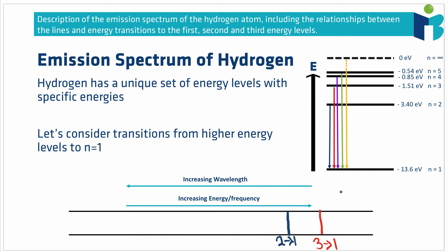For the 4 to 1 transition shown in purple, the photon energy is higher still, but the difference in energy between the 3 to 1 and 4 to 1 transitions is smaller than the difference between the 2 to 1 and 3 to 1, because the gap between n equals 3 and n equals 4 is smaller than between n equals 2 and n equals 3. So the 4 to 1 line is higher energy than 3 to 1, but not by as much. The same logic applies to the 5 to 1 transition in green — higher energy again, but by a smaller increment.